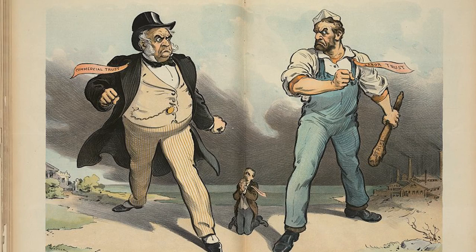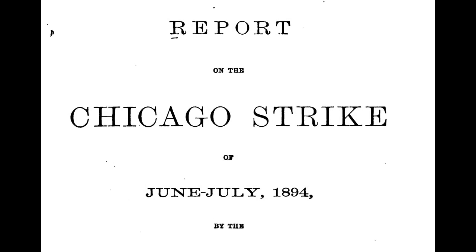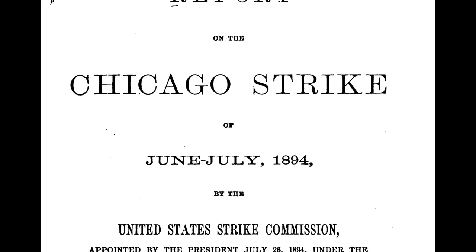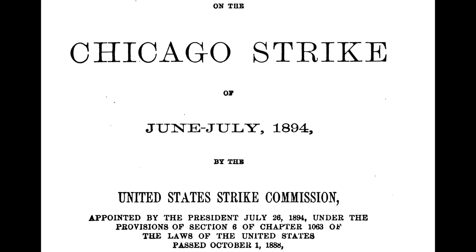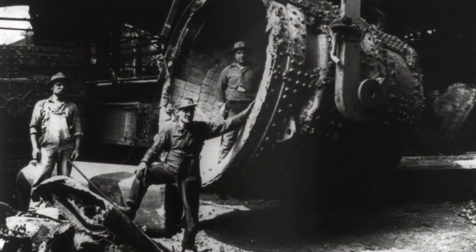Both owners and unions learned the power that federal intervention and injunctions gave to big business fighting labor. President Cleveland appointed a commission to investigate the strike and its causes. The resulting report demonstrated remarkable foresight. It called for recognition of unions as a necessary and useful force to guide workers.